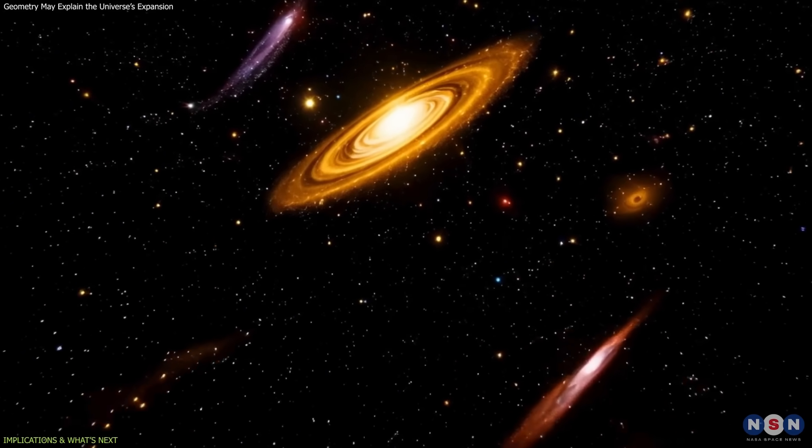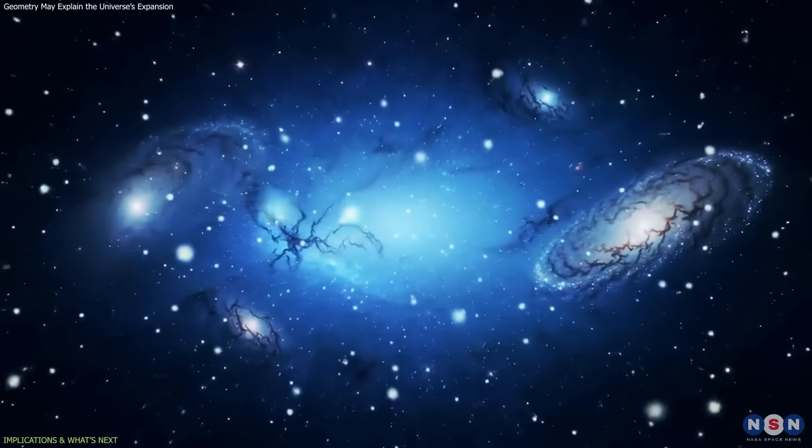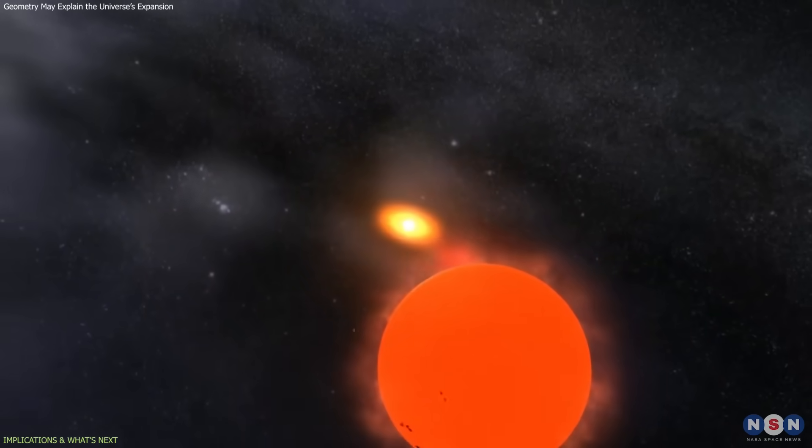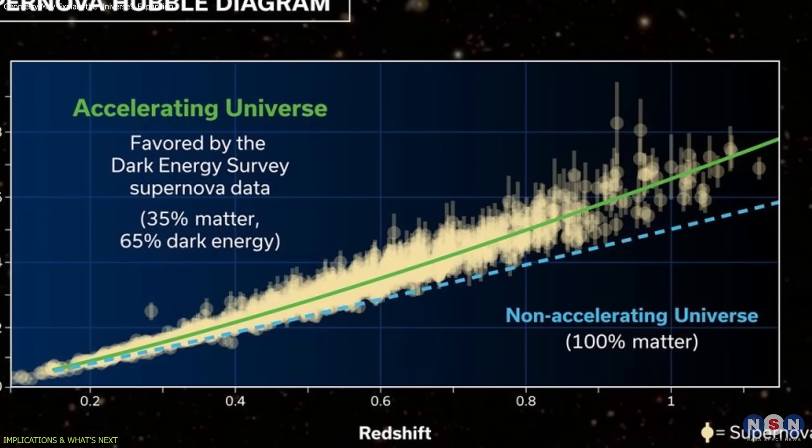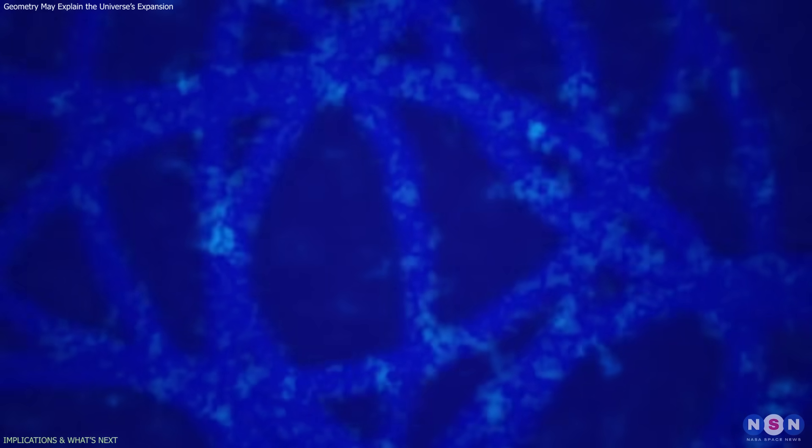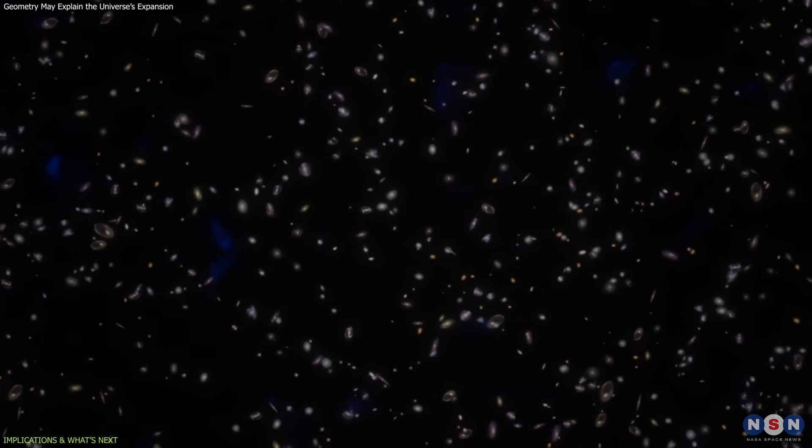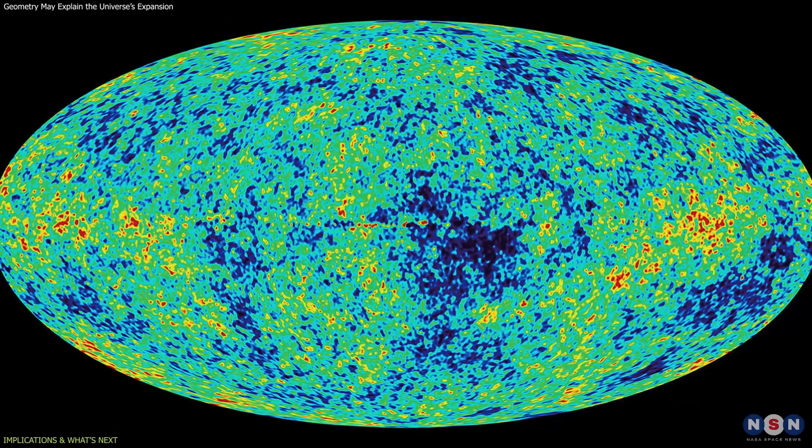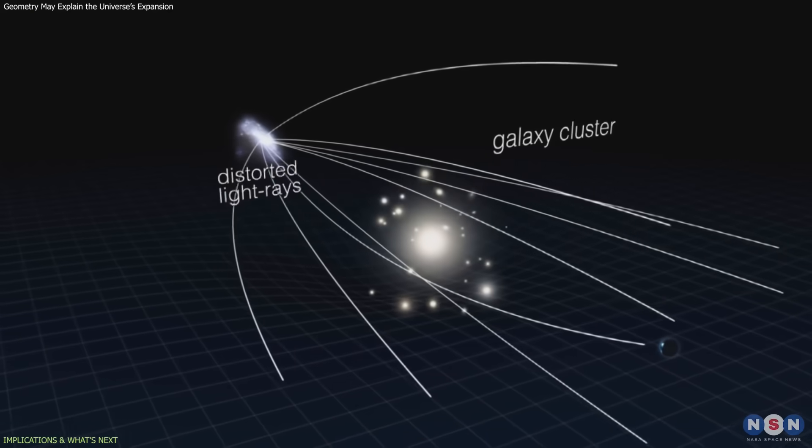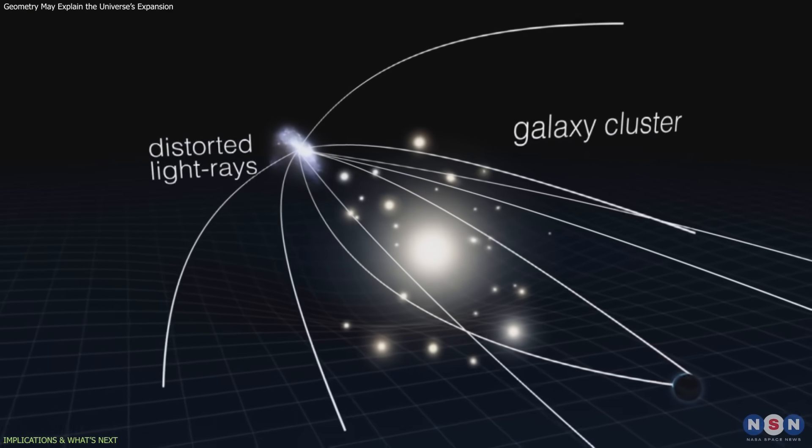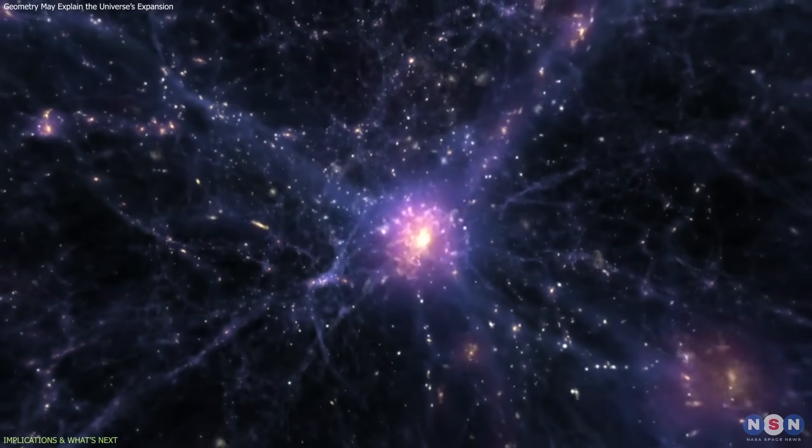But these are possibilities, not conclusions. The next step is rigorous testing. The model must align with Type Ia Supernovae, which trace how expansion changed over time, Baryon acoustic oscillations, which provide a cosmic scale ruler, CMB measurements, which reveal early universe structure, Gravitational lensing, which maps spacetime curvature, and structure growth, which tests how matter evolved.